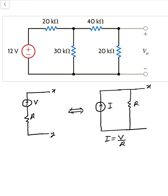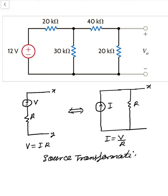The current I is basically V divided by R. And if a current source I is given with R in parallel, then V is equal to I times R. This is called source transformation — a powerful tool to solve a lot of problems in a very easy way.